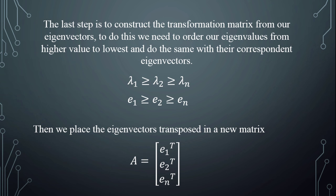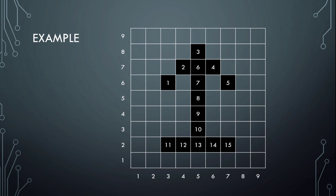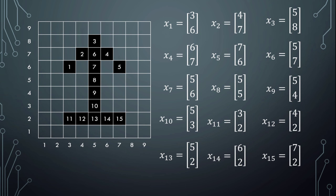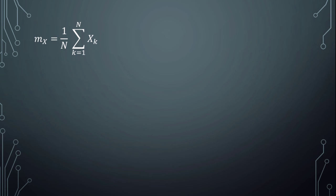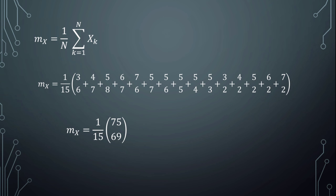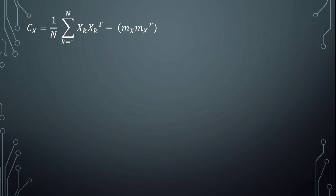Let's see an example. Given this image of an arrow, we express every pixel with a number from 1 to 15. The first step is to calculate the coordinates of every pixel from x1 to x15. Now we calculate the expectation value or mean value with this formula.